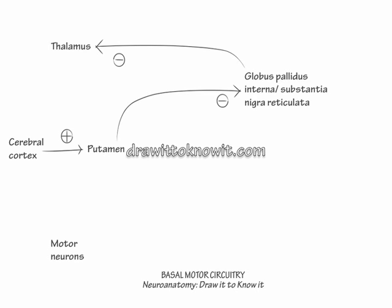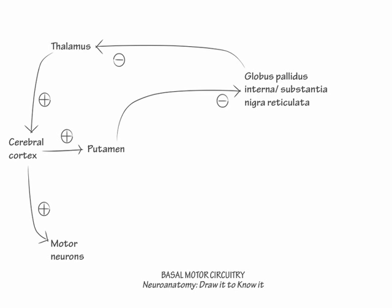Imagine that these two inhibitory pathways cancel one another out. Next, show that the rest of the fiber projections are excitatory — those from the cerebral cortex to the putamen, from the thalamus back to the cerebral cortex, and from the cerebral cortex out to the motor neurons. Label this entire circuit as the direct pathway.